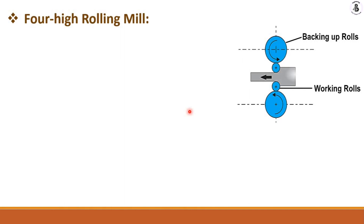The third category is four-high rolling mills. In this case, two main backup rolls are used along with two small-diameter working rolls. The working rolls directly contact the workpiece material, and the periphery of each working roll is in contact with the backup rolls. This arrangement is used when working on harder materials, with the extra stress developed through the working rolls.